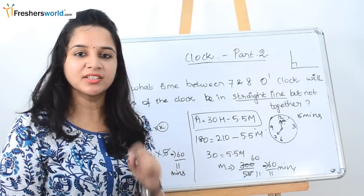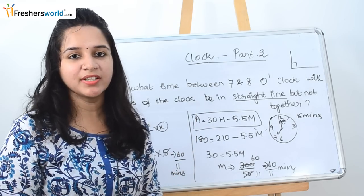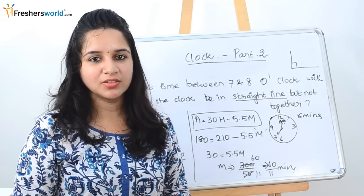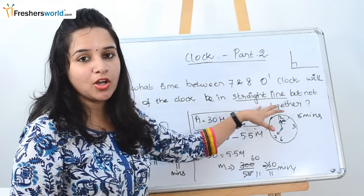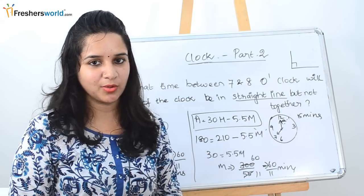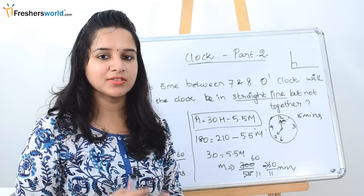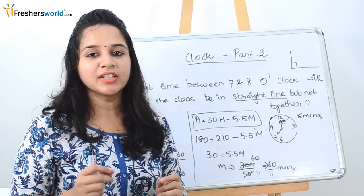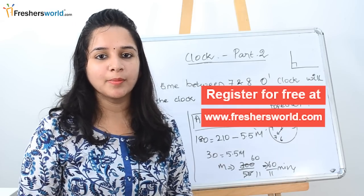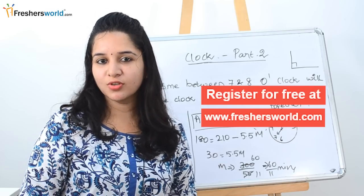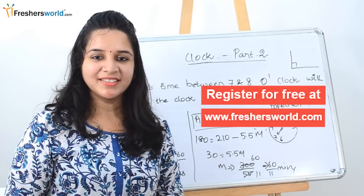Today in clocks, we solved various problems involving the angle between clock hands — whether in a straight line, right angle, perpendicular, or coinciding. We used two techniques: the gain technique and the formula technique (A = 30H − 5.5M). Either technique can be used based on your convenience. In future videos we will deal with tougher clock problems. If you are looking for a job, please register at freshersworld.com, like our video, and subscribe to our channel. Thank you.